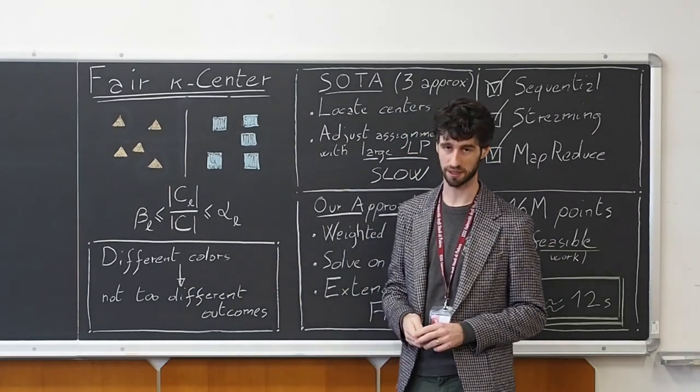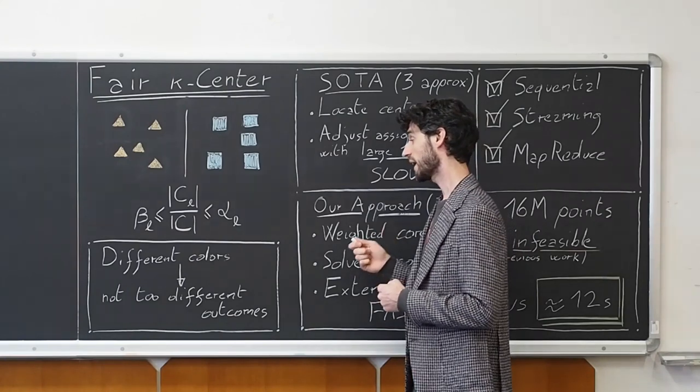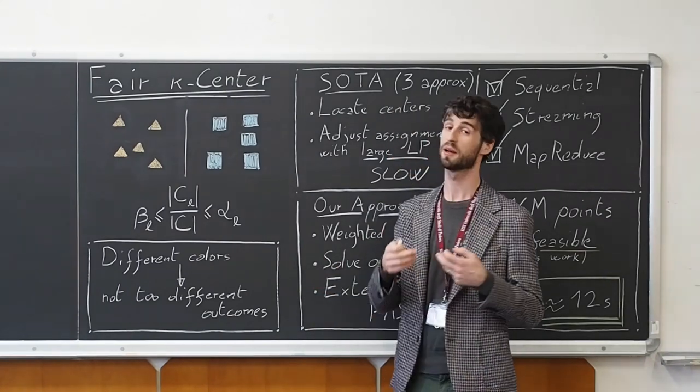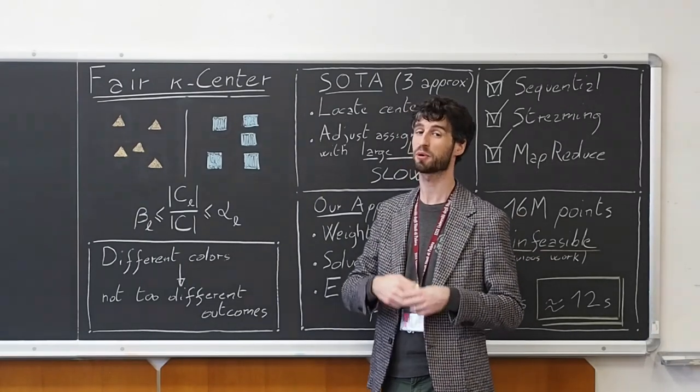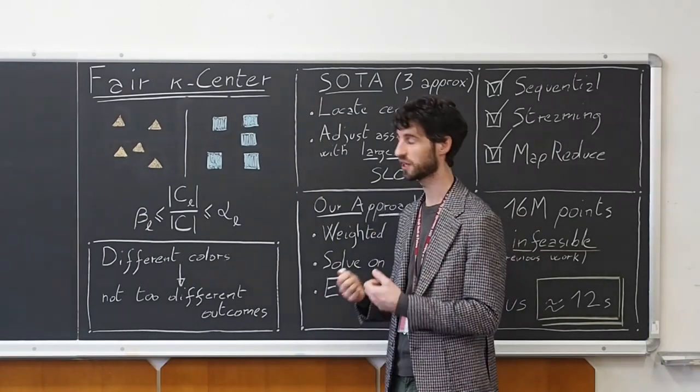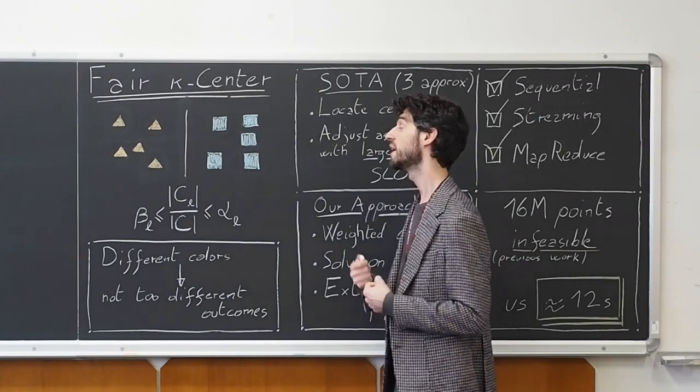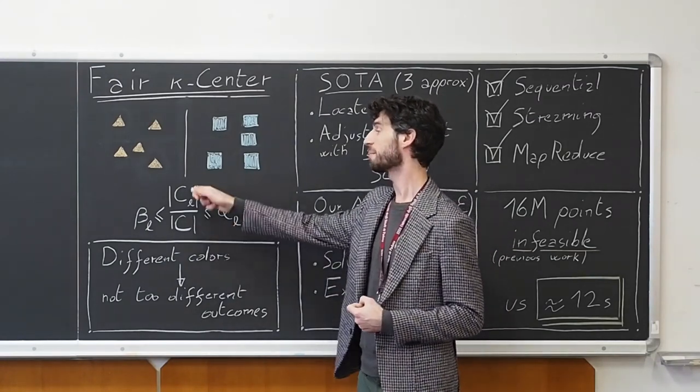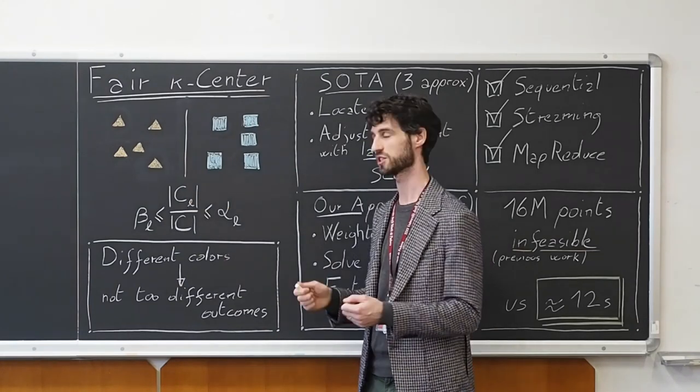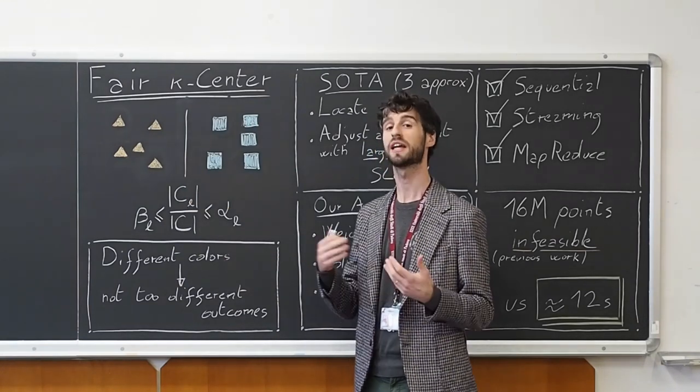And under the notion of disparate impact, we are required to ensure that people from different protected groups do not experience disproportionately different outcomes from the machine learning procedure. This can be translated more formally by requiring that the balance of the points of each color in each cluster is maintained.